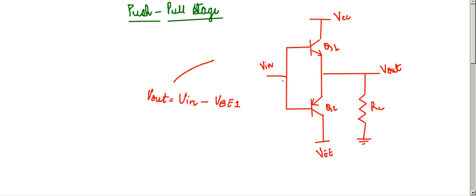To repeat: if VIN is positive, then only Q1 is conducting and we will get the current direction like this. Q1 is conducting and hence VOUT equals VIN minus VBE1. Q2 will remain OFF as this base-emitter junction is reverse biased.